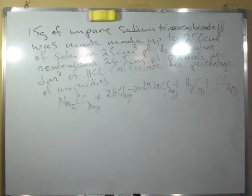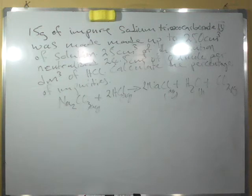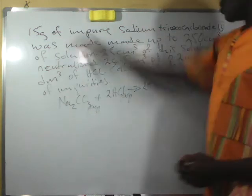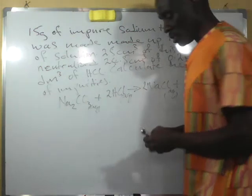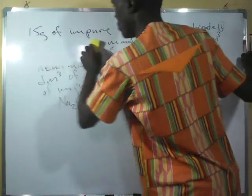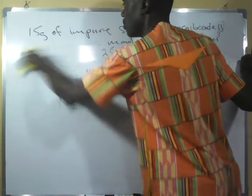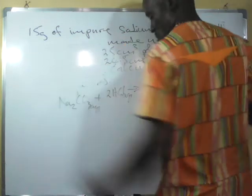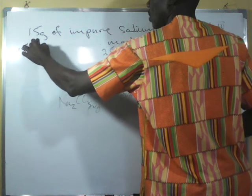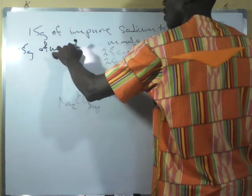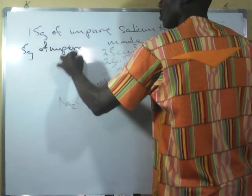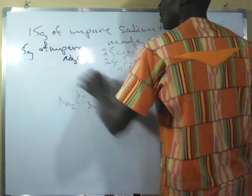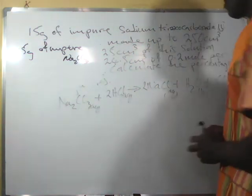What we are going to do here is calculate the percentage of impurities. We have a balanced chemical equation on the board. The first thing we're going to do is use the values given to us. Note that the 15 grams contains the impure substance — that means the impurity plus the pure substance — all together in this impure sodium trioxocarbonate.